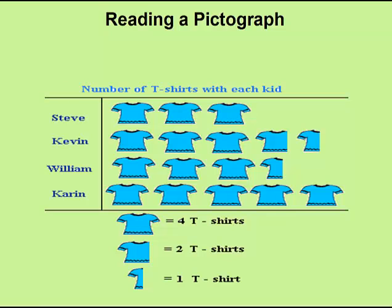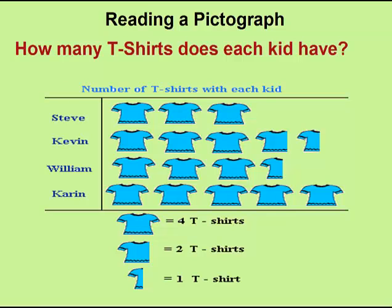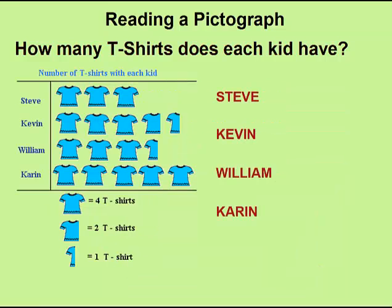In this case, we simply want to determine how many t-shirts each person has. We'll look at the legend at the bottom, where a full t-shirt in the picture represents four actual t-shirts. A partial t-shirt represents two t-shirts, and a small amount of the t-shirt represents one t-shirt. We'll begin with Steve. Steve in the pictograph has three full t-shirts, each one representing four, so Steve has a total of twelve t-shirts.